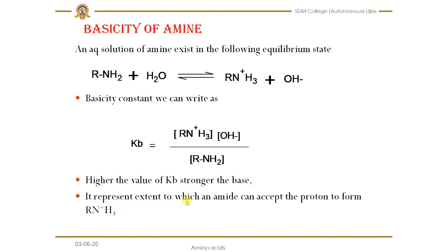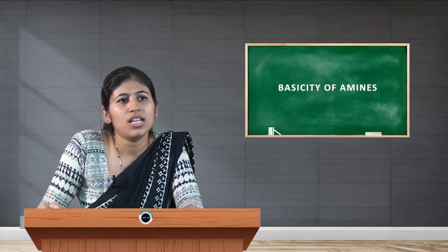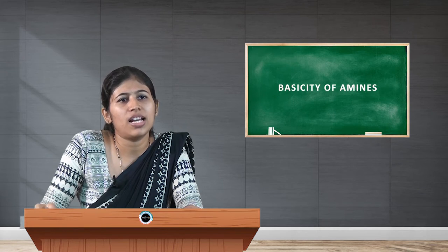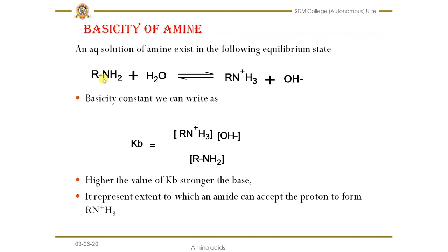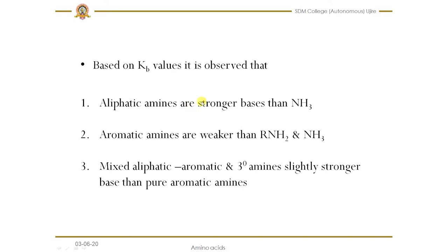KB represents the extent to which an amine can accept a proton to form RNH3+. If the availability of the lone pair electrons on the nitrogen atom is high, it can easily accept a proton from any acid, giving a higher KB value and stronger basicity.